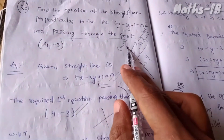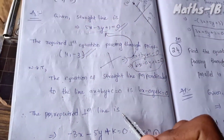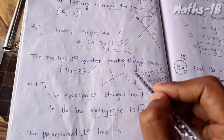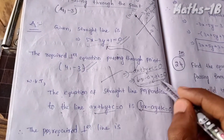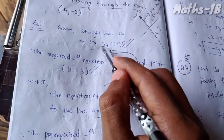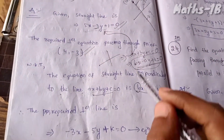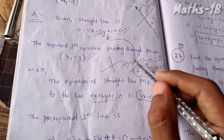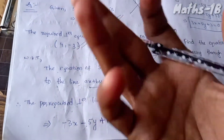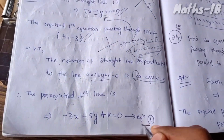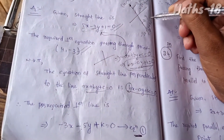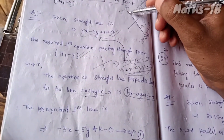Because it is perpendicular and passing through a point, the required equation is formed. Here we have b, so we have bx minus ay plus k. The y-coefficient is minus 3, so we get minus 3x, and the a-value gives minus 5y, so the equation is minus 3x minus 5y plus k is equal to 0. This is equation number 1.